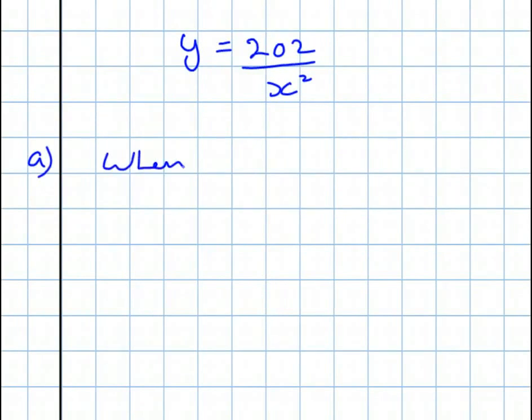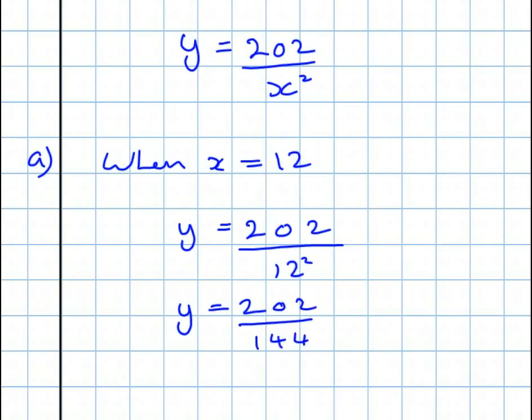What is Y when X is 12? Question 8. When X equals 12, Y is equal to 202 over 12 squared. Y is equal to 202 over 144. Now, let's divide by the common factor of 2.